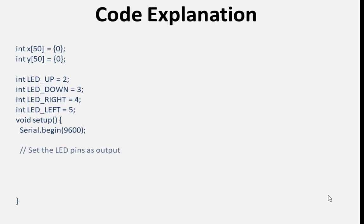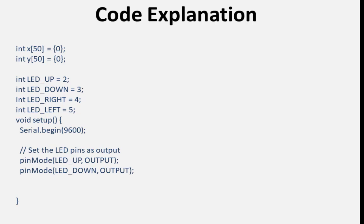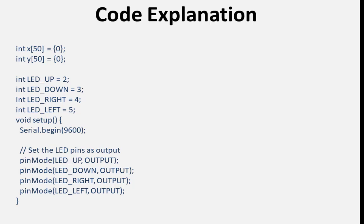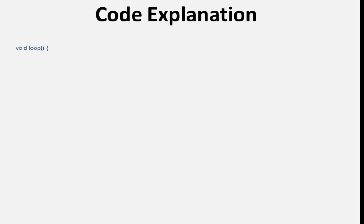This is the setup function, called once when the Arduino starts. Serial.begin(9600) initializes serial communication at 9600 bits per second, allowing communication with the serial monitor on your computer. pinMode configures the pins led_up, led_down, led_right, and led_left as output pins, indicating they will be used to control LEDs.